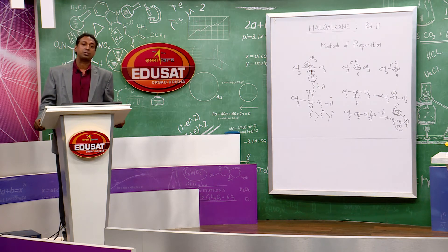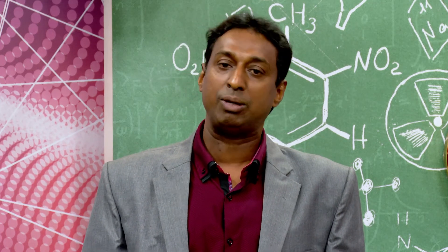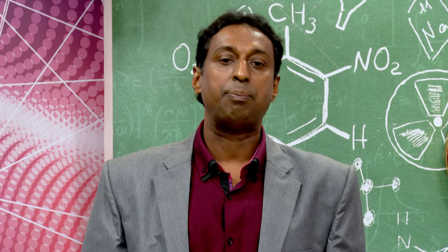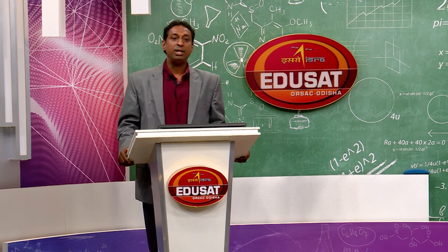In anti-Markovnikov addition: Br attaches to the carbon with more hydrogen atoms. Example: CH3-CH=CH2 + HBr (with peroxide) → CH3CH2CH2Br (n-propyl bromide).